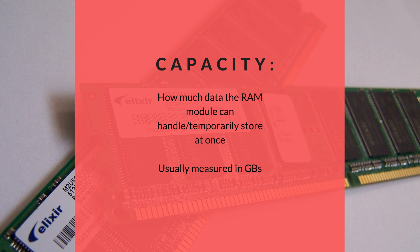A RAM's capacity refers to how much data the module can handle. Nowadays this is measured in gigabytes, with the most common DIMM sticks having 4 gigabytes, 8 gigabytes, or 16 gigabytes of RAM.